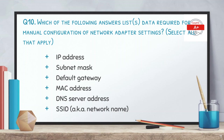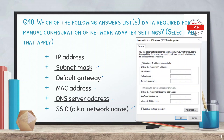Question number 10: which of the following answers lists data required for manual configuration of network adapter settings — select all that apply. The options are IP address, subnet mask, default gateway, MAC address, DNS server address, and SSID. The correct answers are IP address, subnet mask, default gateway, and DNS server address. For manual network configuration you need to provide all four of these settings.